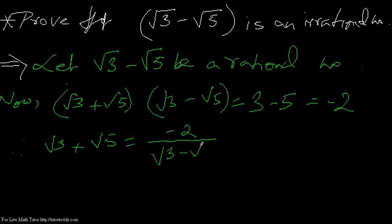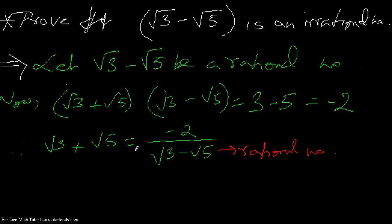By assumption, √3 minus √5 is a rational number. So from this equation, since -2 divided by a rational number is rational, by assumption this is a rational number, which means √3 plus √5 should also be a rational number.